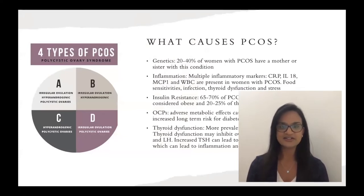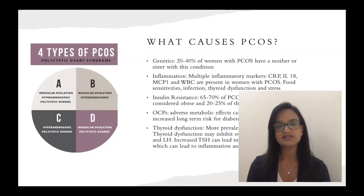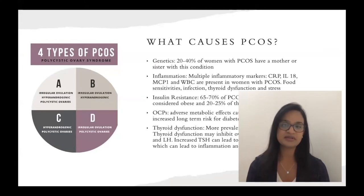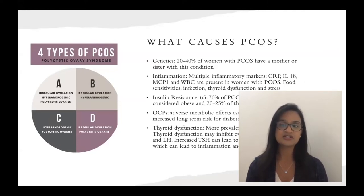There is a lot of speculation as to what is a pinpoint cause of PCOS. 20 to 40% of women with PCOS have a mom or sister with this condition, so it is linked to genetics. However, there are a multitude of other variables to consider. Inflammation is a huge factor — multiple inflammatory markers such as CRP, IL-18, MCP-1, and WBCs are present in women with PCOS. Food sensitivities, infection, thyroid dysfunction, and stress all need to be addressed when evaluating PCOS.